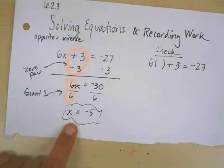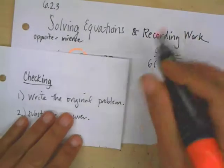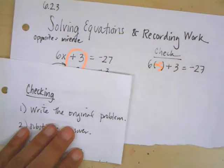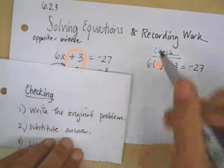The second step is I'm going to substitute in the answer. So I think that the answer is negative 5. So where it was x, I'm going to put in my answer of negative 5.